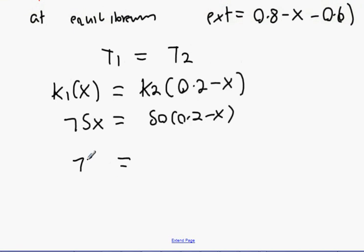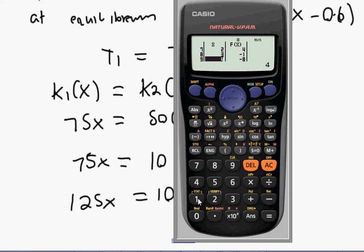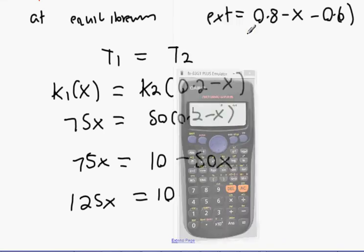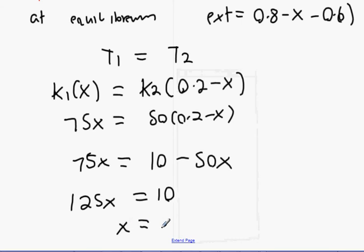And then put them in. What we're going to get is 75x equals 50 times 0.2 minus x. That's going to be 75x equals 50 times 0.2, 10 minus 50x. 125x equals 10. What's 10 divided by 125? 0.08. So x equals 0.08 meters.